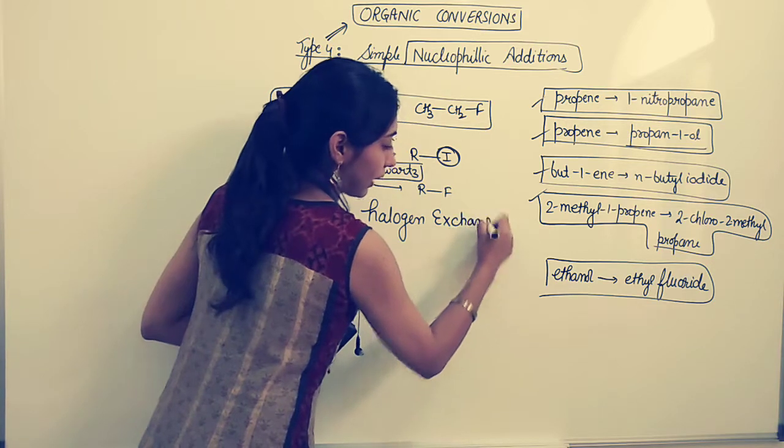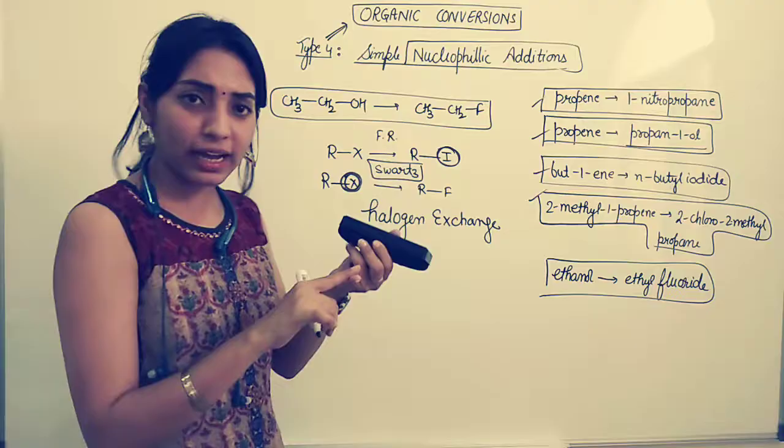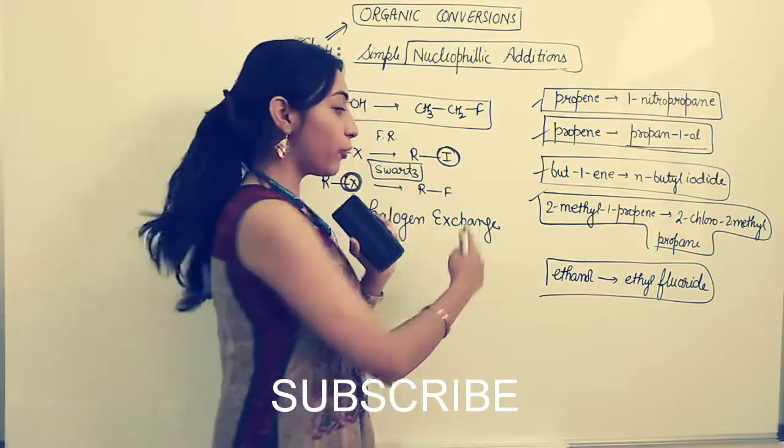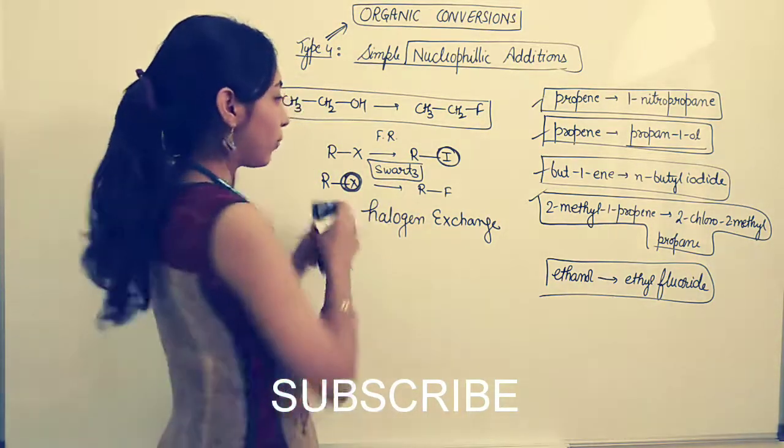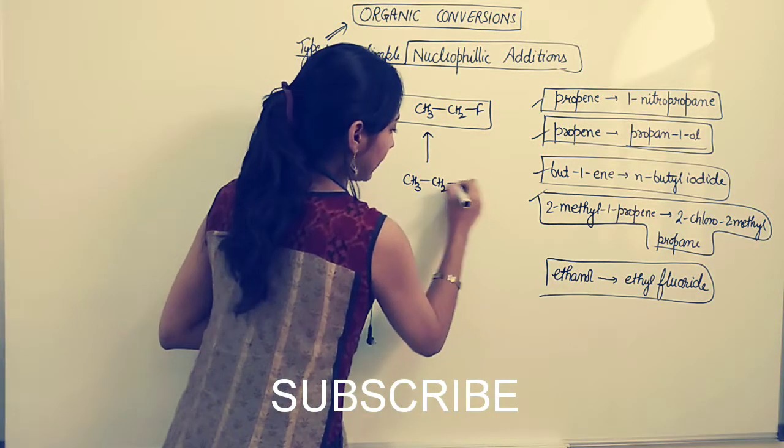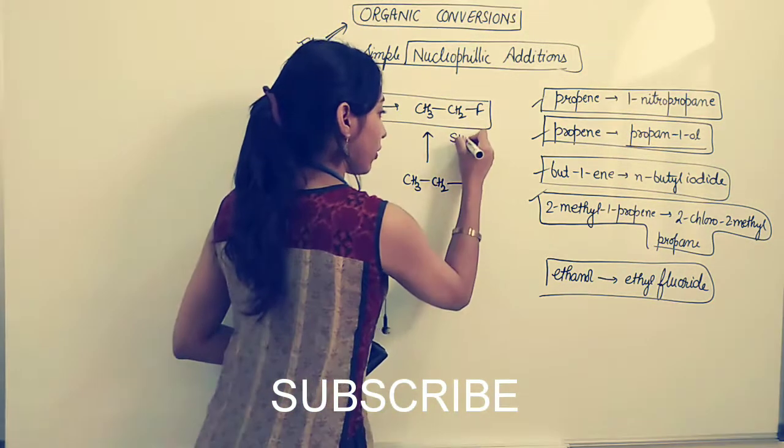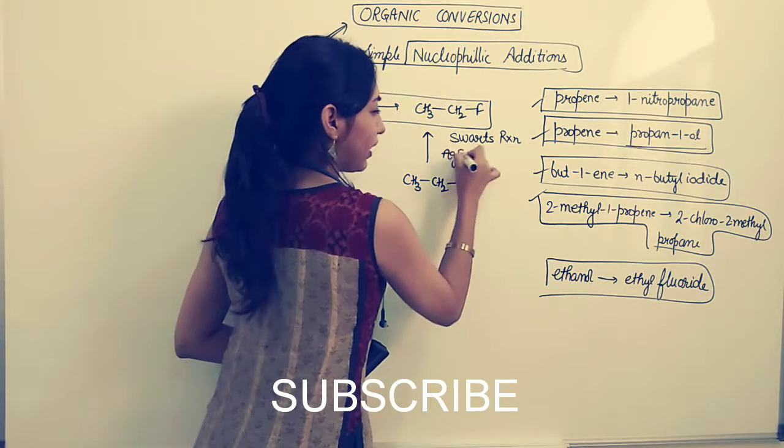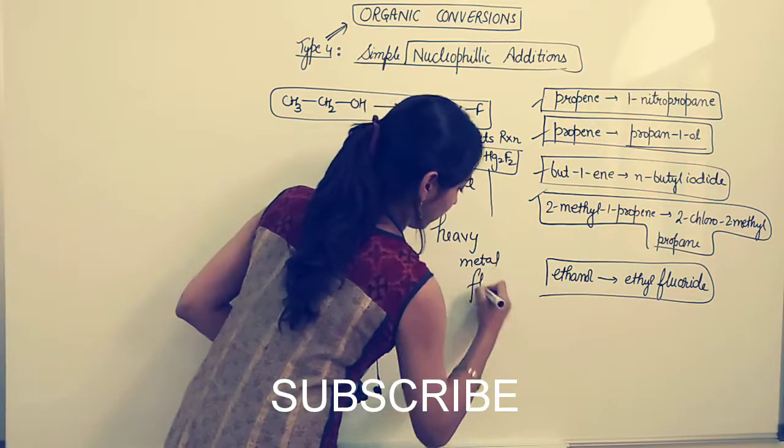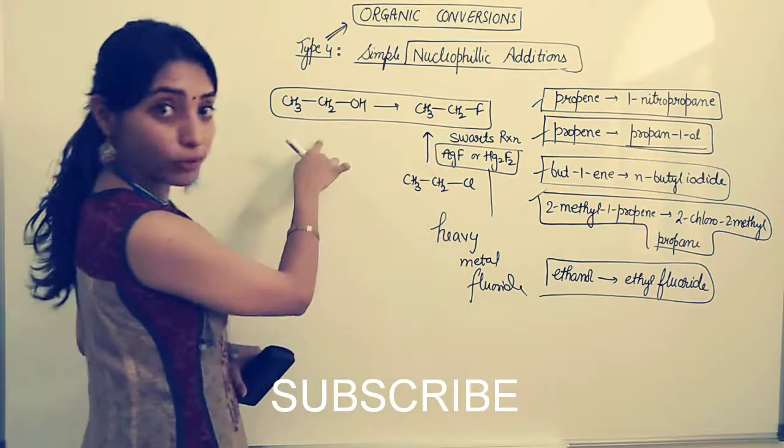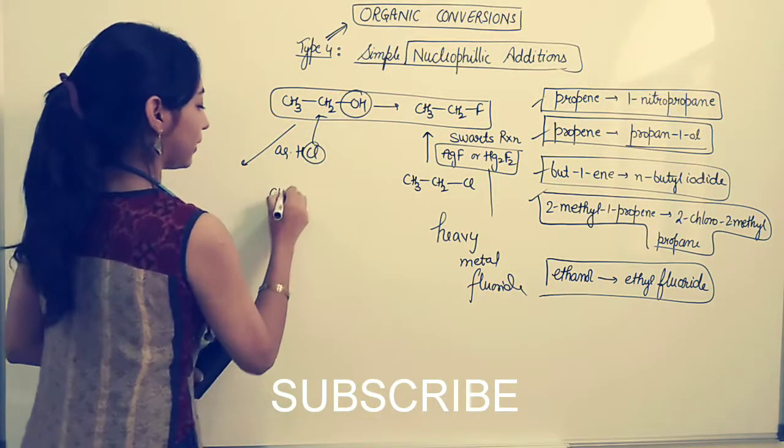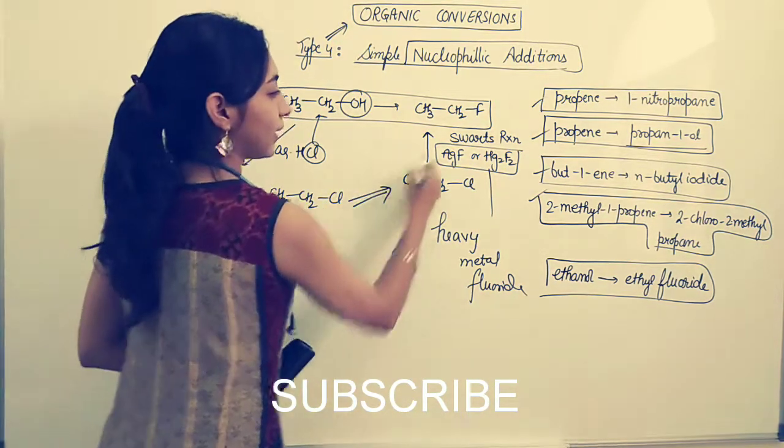This Swartz reaction is also kind of halogen exchange reaction. You first have to introduce any group like Cl or Br and then you have to exchange it with fluorine. Fluorine can never be directly introduced in any particular compound - that's a rule. So Swartz reaction can be done with CH3-CH2-Cl. If I have Cl I can easily do Swartz reaction and the reagents for Swartz reaction you have to use either AgF or Hg2F2 - you have to use heavy metal fluoride. Now how to make Cl out of OH? I will be first adding aqueous HCl, Cl will come here and OH will go away. So you get CH3-CH2-Cl and then you do Swartz reaction and it's done.